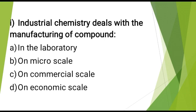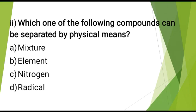Industrial chemistry deals with the manufacturing of compound. The correct answer is: on commercial scale. Which one of the following compounds can be separated by physical means? The correct answer is: mixture.